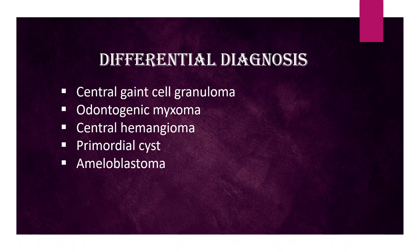Differential diagnosis. First, central giant cell granuloma — it has a honeycomb pattern and is usually seen in an anterior location. Next, odontogenic myxoma — fine trabeculation resembling a string-of-tennis-racket pattern. Next, central hemangioma — honeycomb pattern with local gingival bleeding and pumping action of tooth or teeth. Next, primordial cyst — thick yellowish granular fluid is seen. Next, ameloblastoma — it is associated with a much older age group.